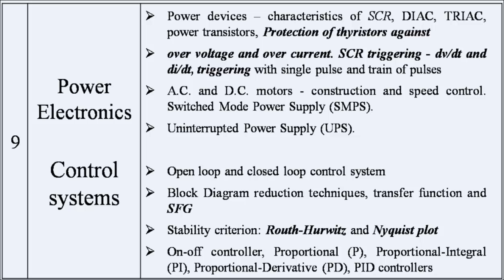In control systems, stability is analyzed via time domain and frequency domain. In time domain: RH criteria and root locus. In frequency domain: Bode plot and Nyquist plot — polar plot is a subset of Nyquist plot. Controllers and compensators are important. Know what high pass filter and low pass filter mean, and what their transfer functions are.